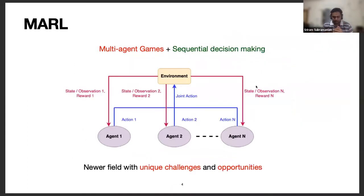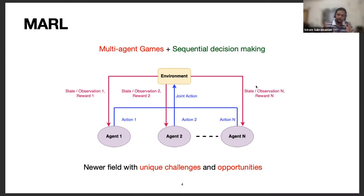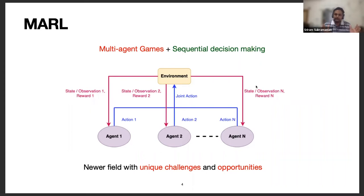Before coming back to the problem of scaling in multi-agent reinforcement learning, let me formally introduce what multi-agent reinforcement learning is all about. Most talks in reinforcement learning have the basic RL slide where one agent interacts with the environment, provides an action, and obtains reward signals. But I have a different slide pertaining to multi-agent reinforcement learning, because that is going to be the focus of my talk today.